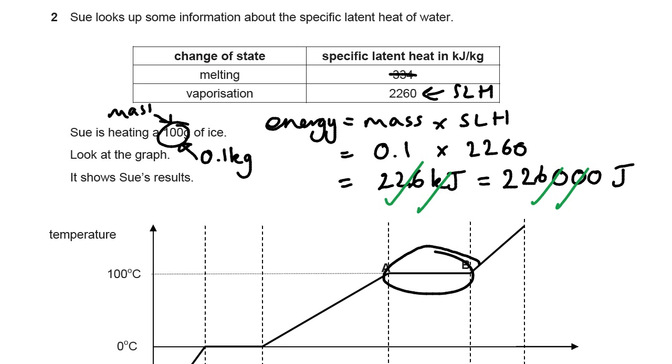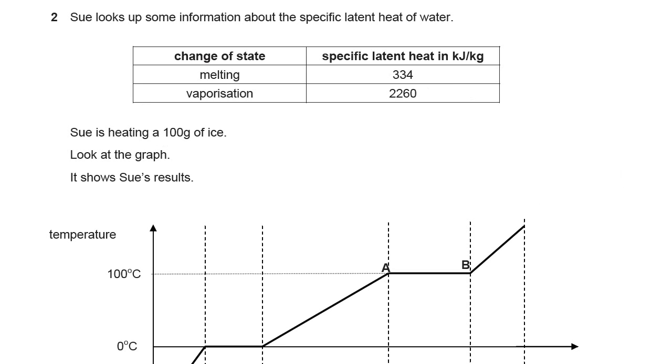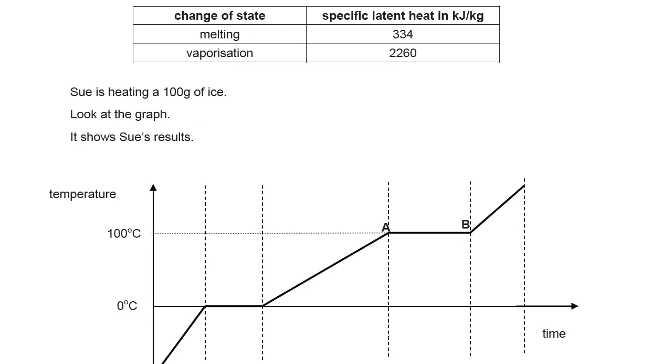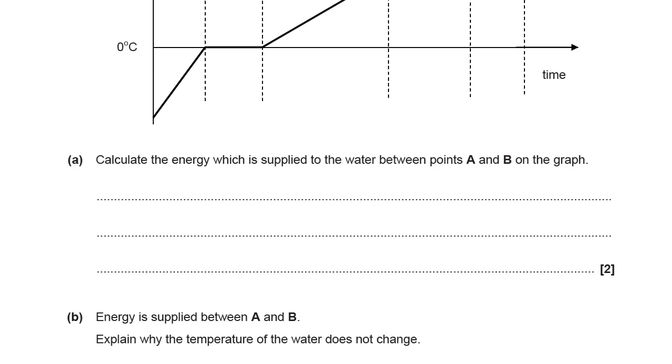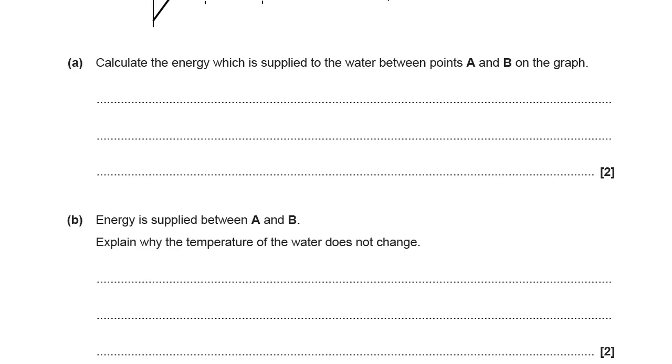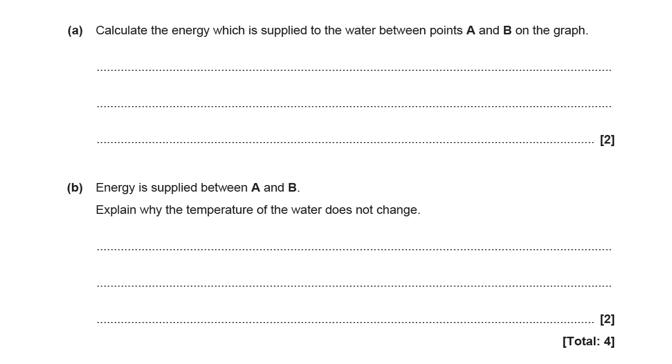We're just going to ask you what's actually happening and why does the temperature not change during those flat sections of the graph. It says energy is supplied between A and B. Why does the temperature of the water not change? Well, this is really a question about the difference between heat energy and temperature.